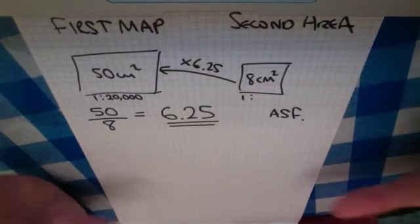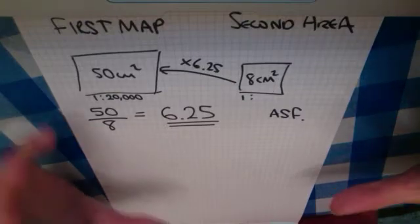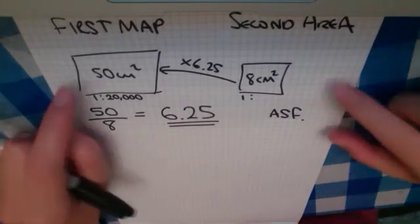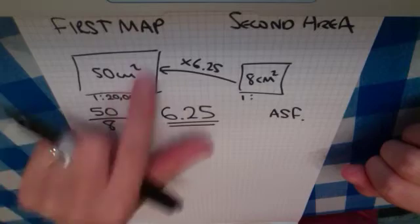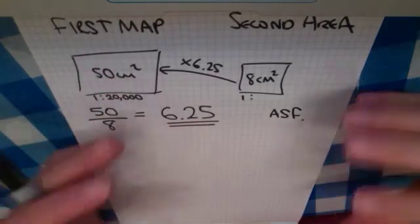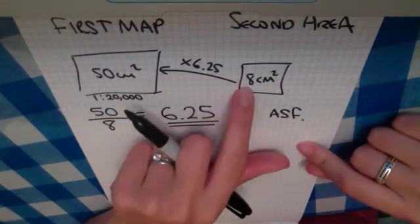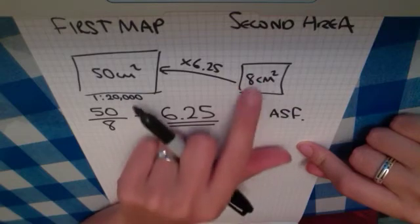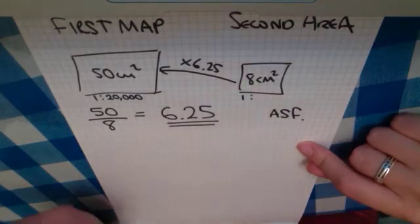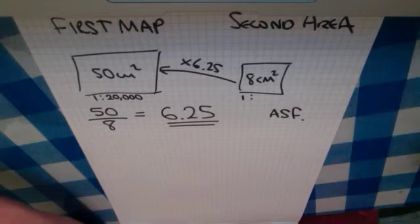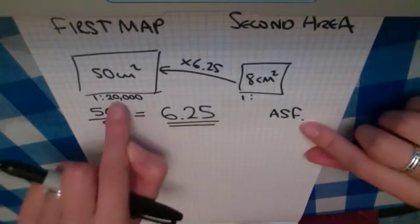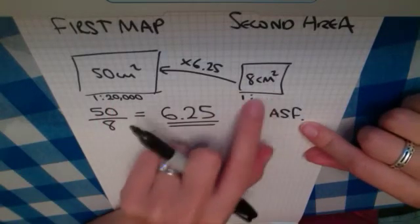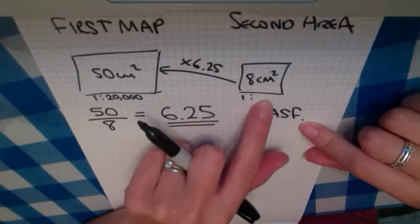We need to think very logically and think about the real-life application of this problem. If this first map has this area of 50 centimetres squared showing a particular area in real life, and this one's only 8 centimetres squared, I hope you agree that this one's a bit more zoomed in. And that means that for every centimetre, it means more in real life. So this one's 20,000. This one's going to be a bigger number.